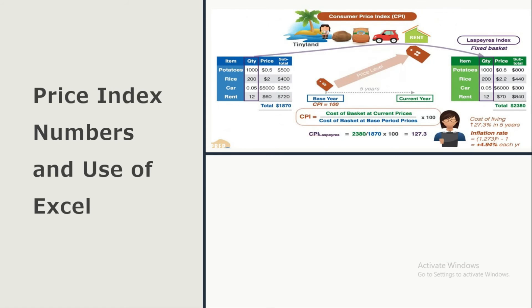Then we have index numbers. Index numbers are very commonly used tools for economists to see changes in the prices of different items and to compare items in different areas, including cost of living and consumer price index numbers.